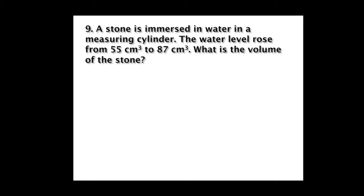Now I am going to question number 9. A stone is submerged in water in a measuring cylinder. The water level rose from 55 cubic centimeters to 87 cubic centimeters. What is the volume of the stone? There are two volumes: V1 = 55 cubic centimeters (the initial volume) and V2 = 87 cubic centimeters (the new volume after submerging the stone).